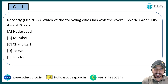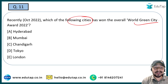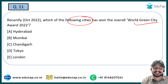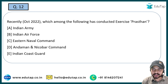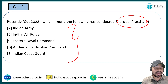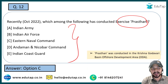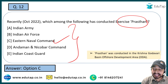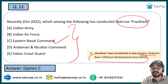The next question: which of the following cities has won the overall World Green City Award 2022? The right answer is Hyderabad. Moving on, which of the following forces conducted Exercise Prasthan? You should remember who conducted it and where. The right answer is the Eastern Naval Command, which conducted this exercise in the Krishna Godavari Basin Offshore Development Area.